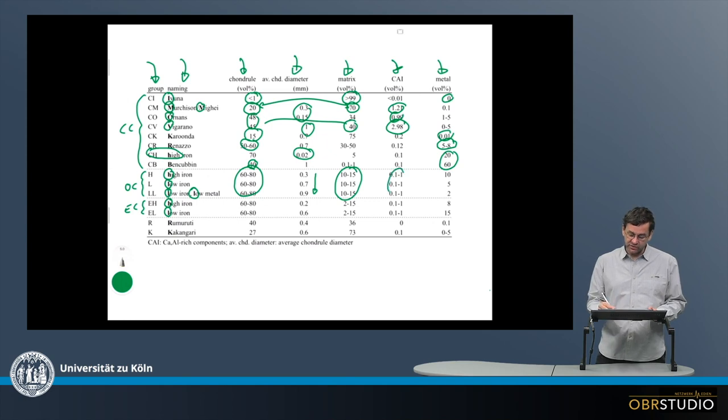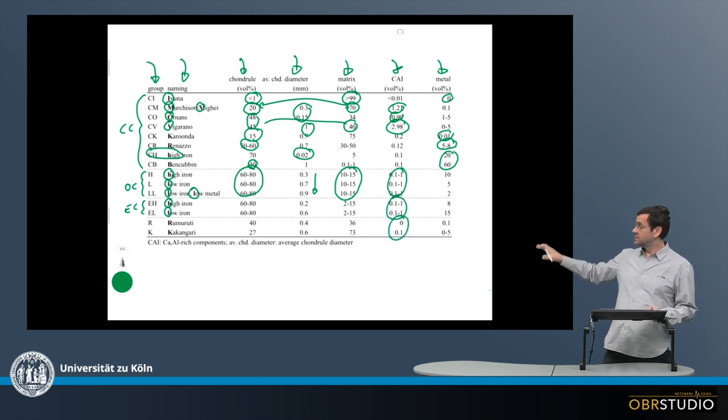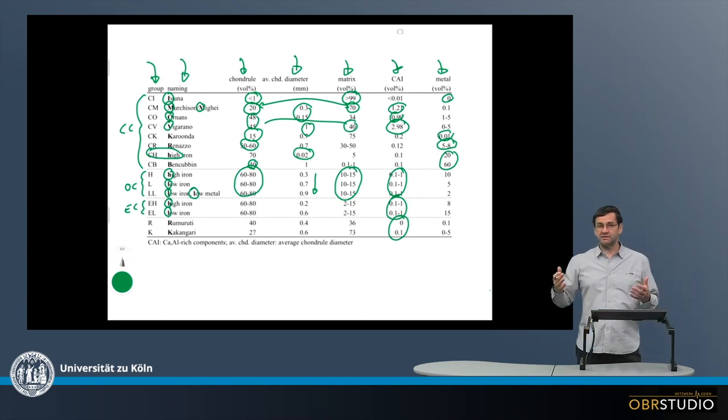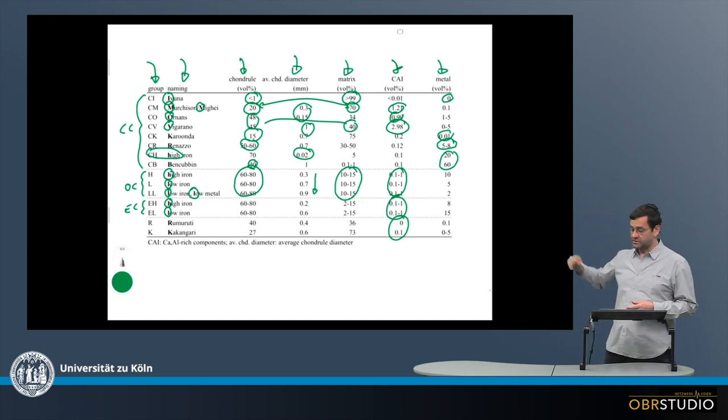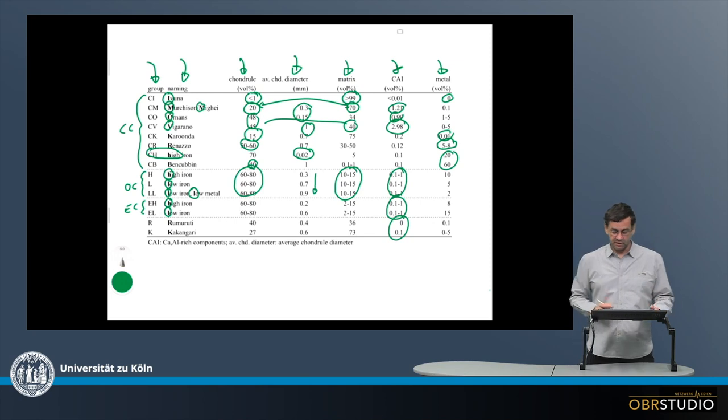Now CAIs are really low in the ordinary chondrites as well as in enstatite and kakangariite and rumrutiite. So most of the CAI abundances are highest in the carbonaceous chondrites and particularly in the CV chondrites.